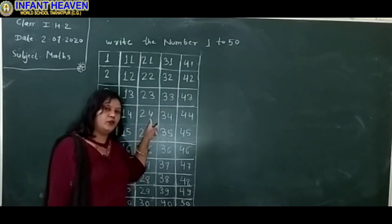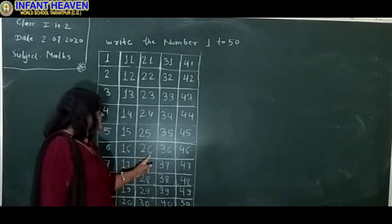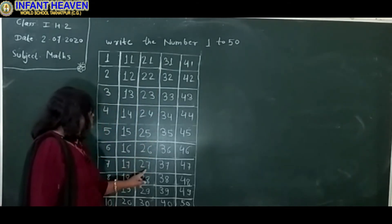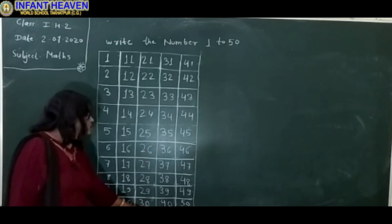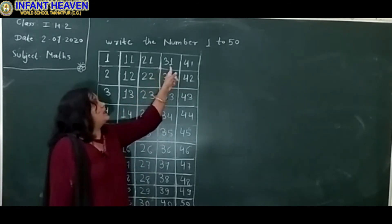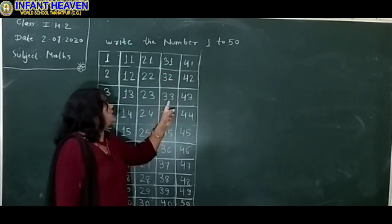2, 4, 24. 2, 5, 25. 2, 6, 26. 2, 7, 27. 2, 8, 28. 2, 9, 29. 3, 0, 40. 3, 1, 31. 3, 2, 32. 33, 34.